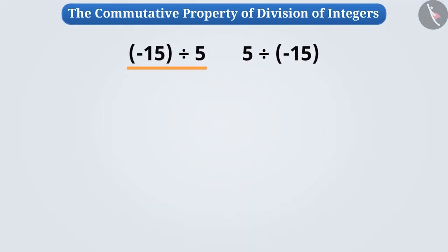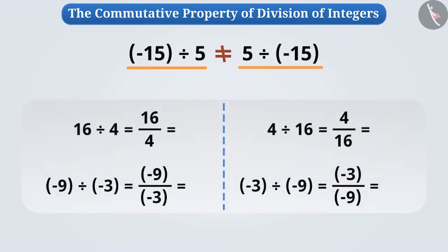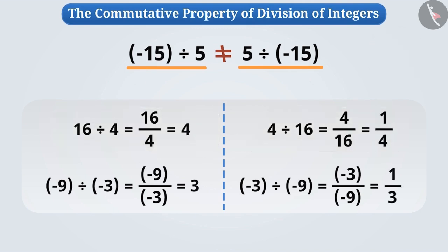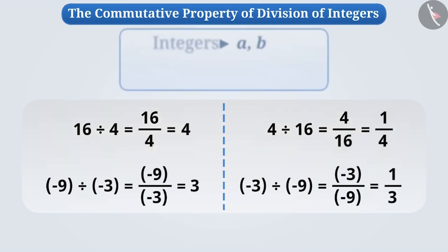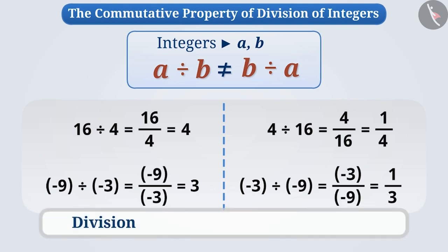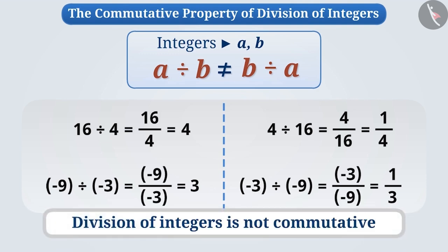Therefore, minus fifteen divided by five is not equal to five divided by minus fifteen. This shows that the result of division of any two integers is not equal to the result obtained by changing their order. That is, the division of integers is not commutative.